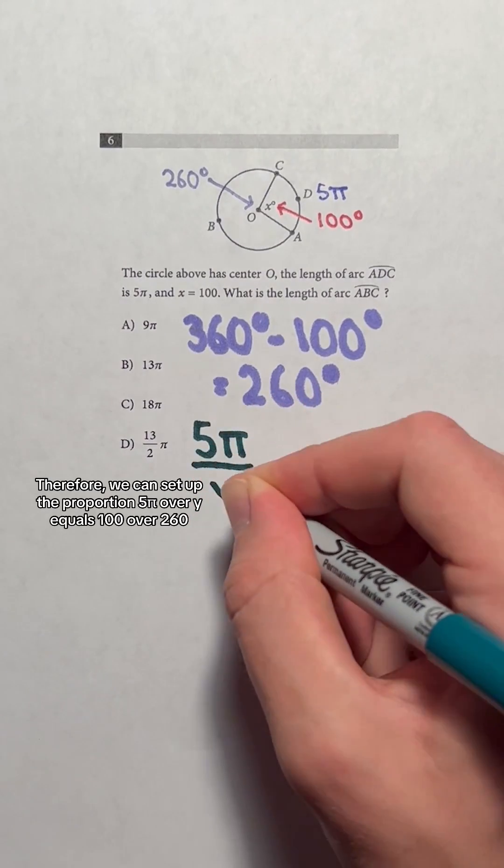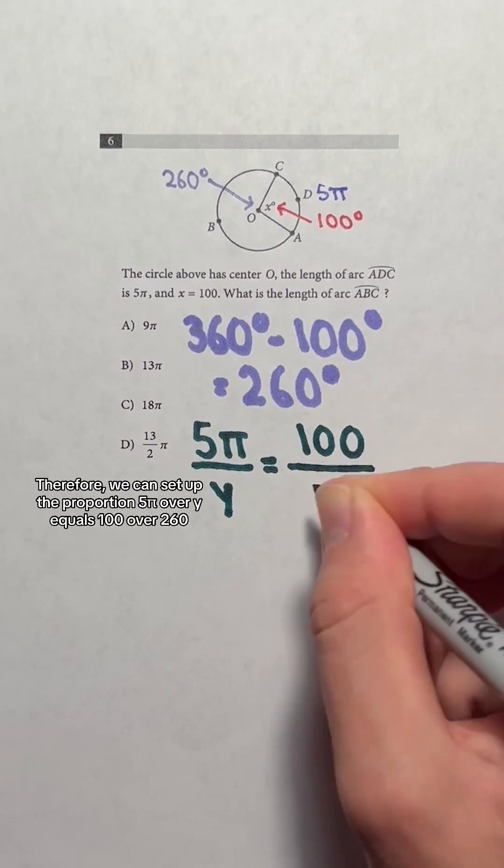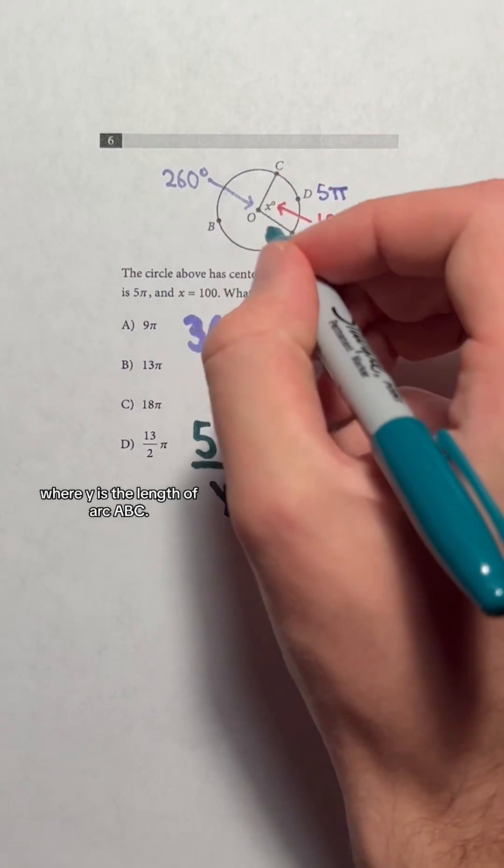Therefore, we can set up the proportion 5π over y equals 100 over 260, where y is the length of arc ABC.